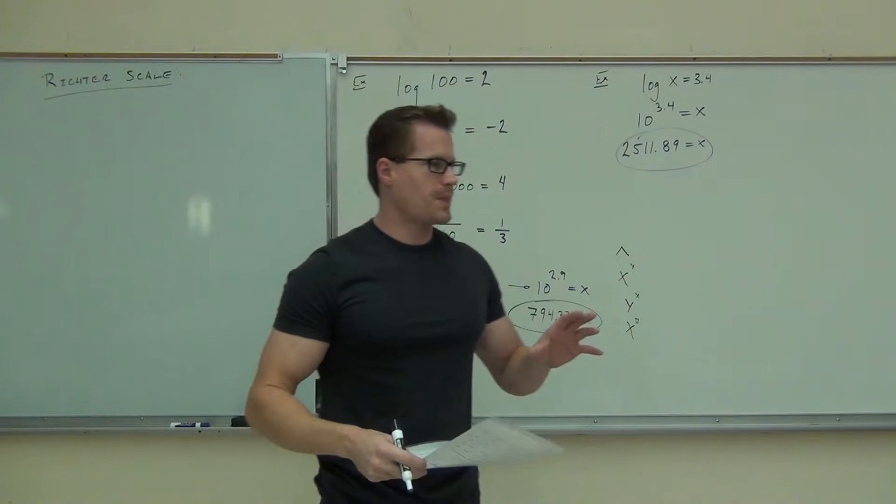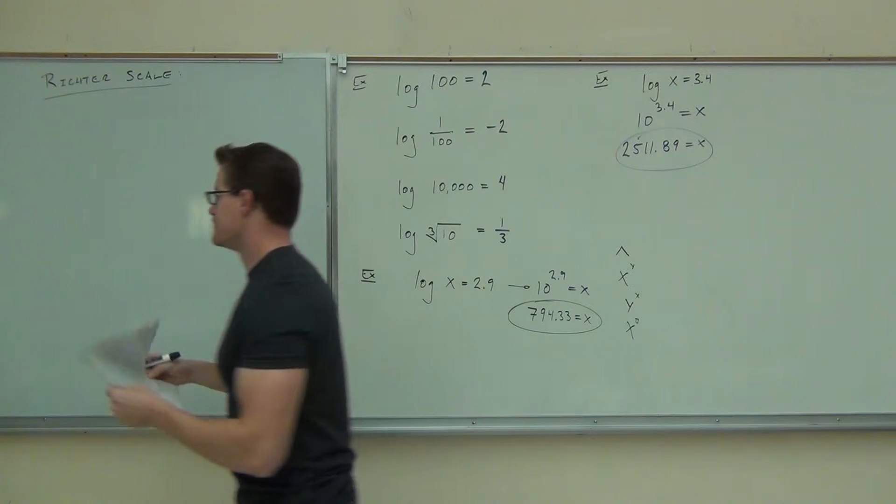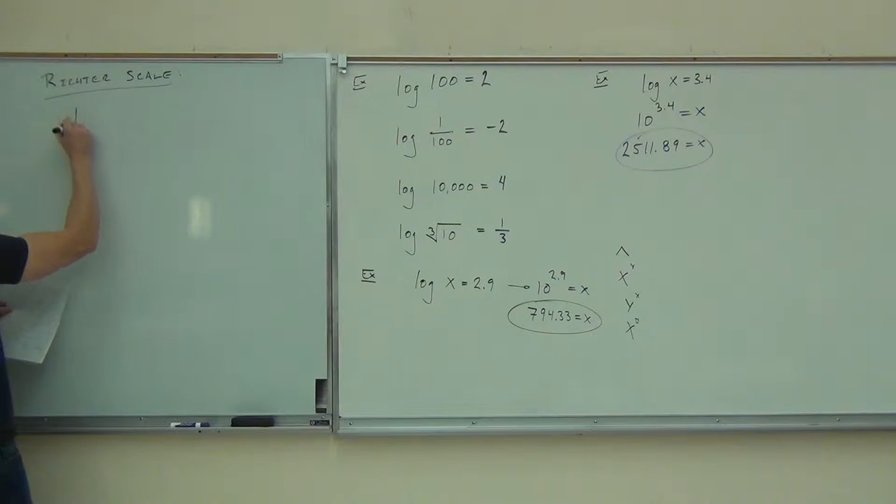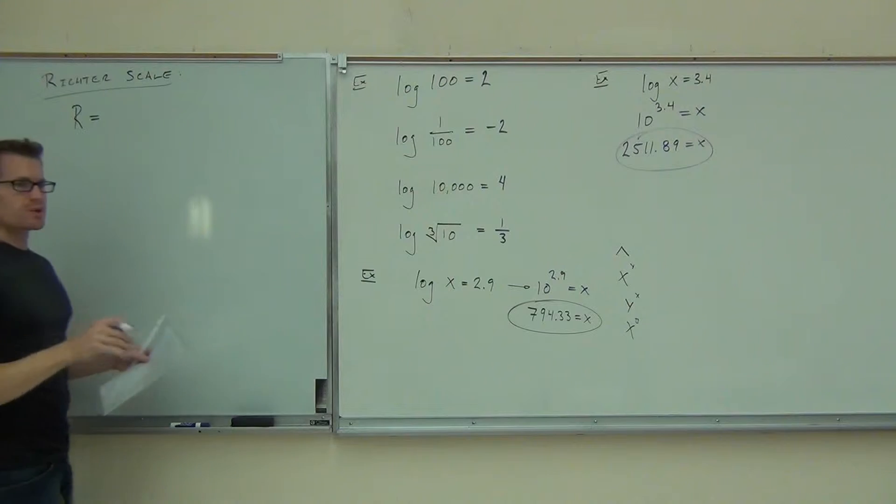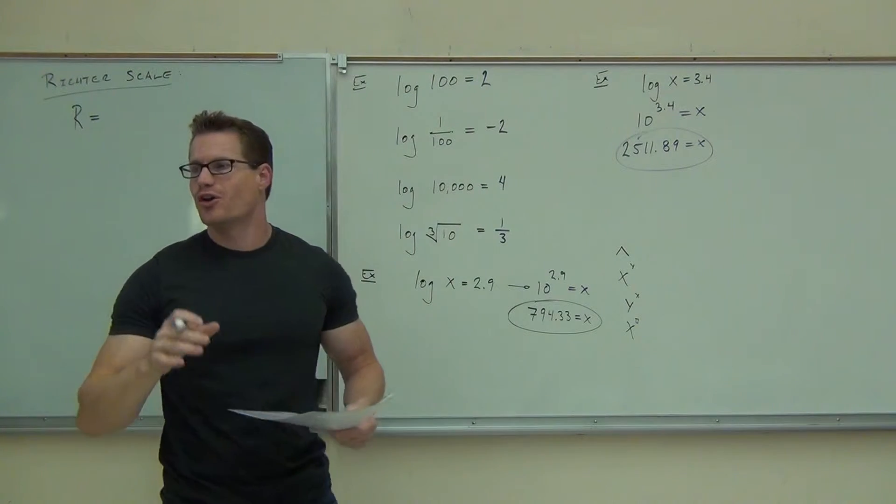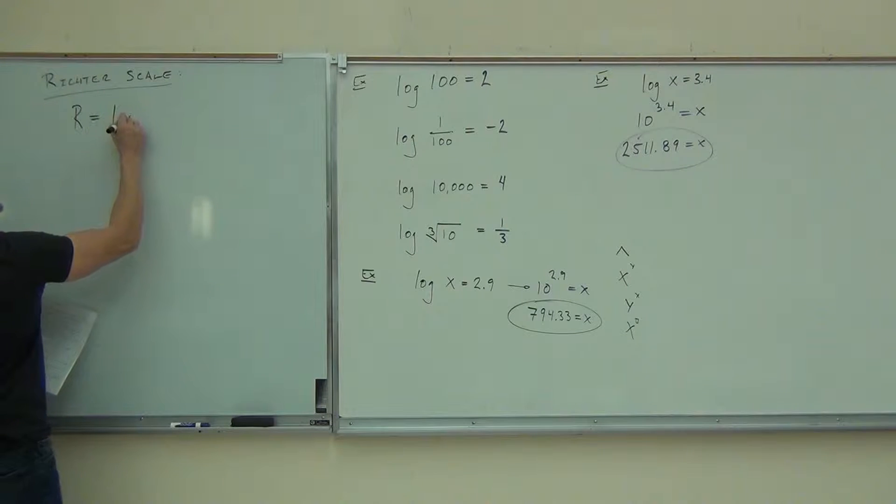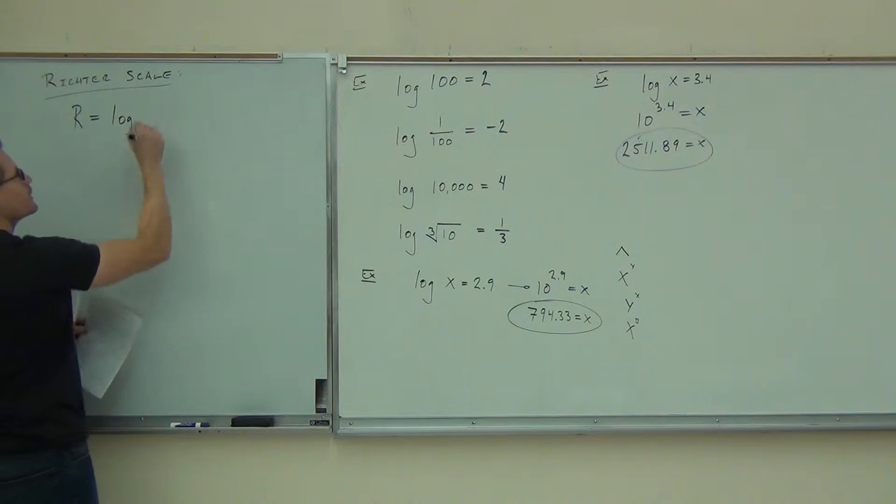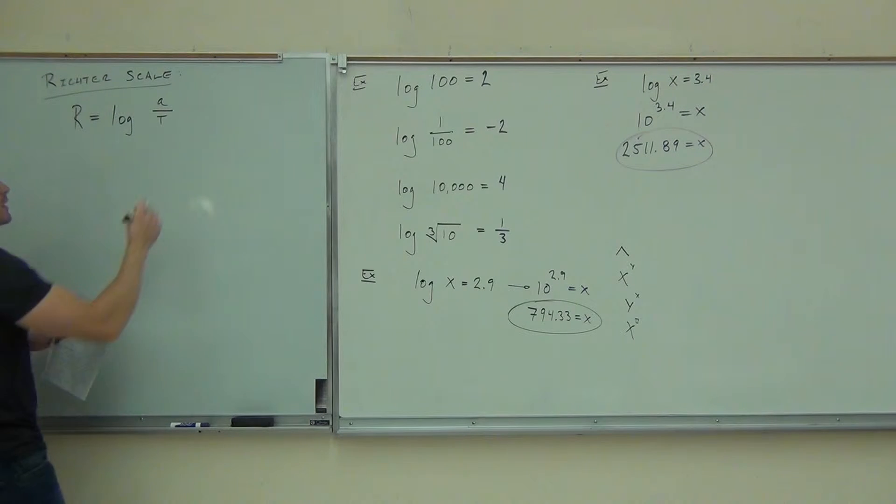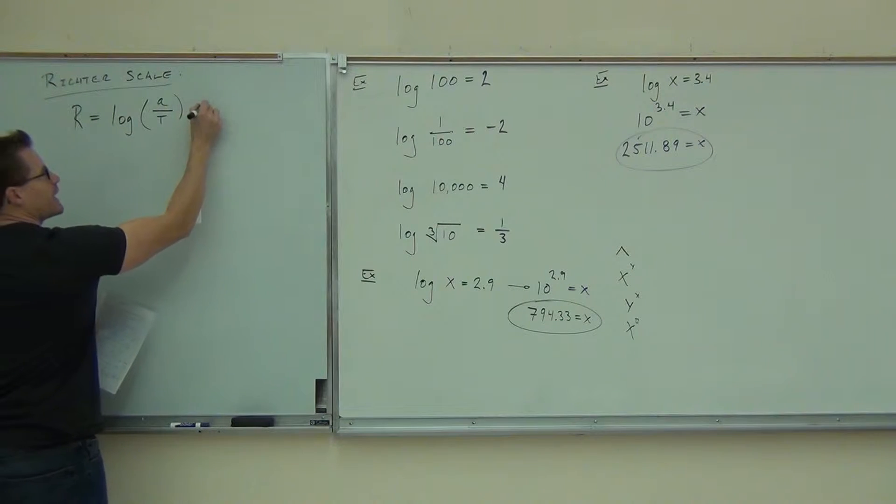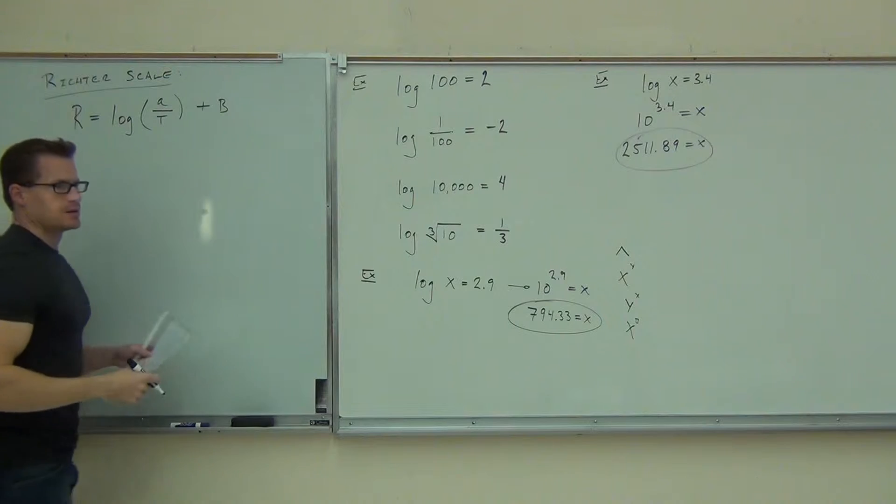Here's what the Richter scale's formula is, how it's calculated. R, the reading on the Richter scale, is actually based on a logarithm. It's a log base 10, so it's a common log. And it has to do with A over T, that after you calculate that logarithm, you add some B.